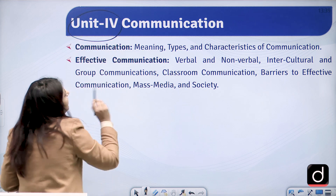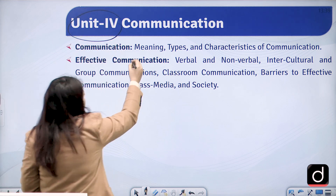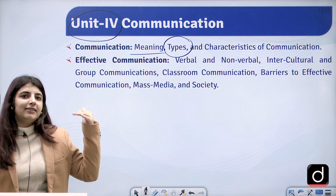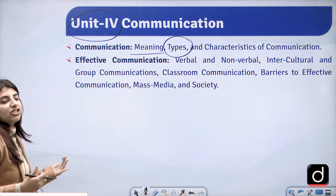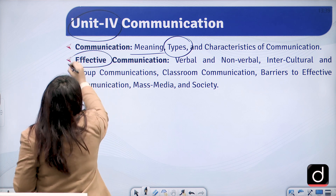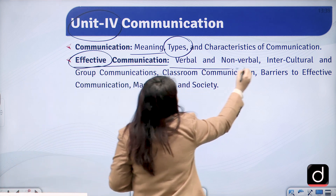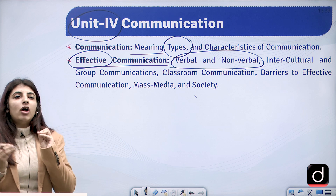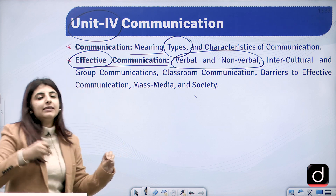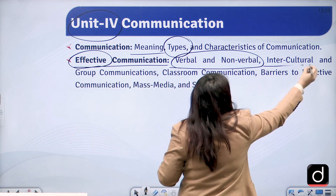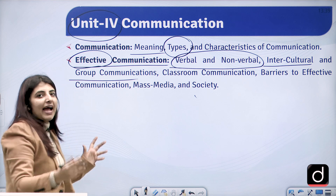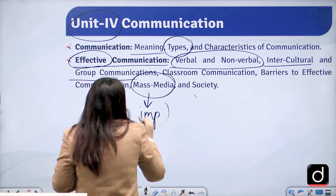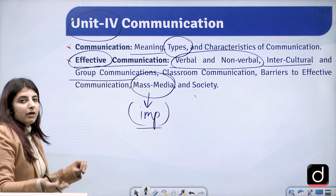Unit 4 is Communication. It covers the meaning of communication, why we communicate, types, and characteristics of communication — just as there are characteristics of research. It also covers what makes effective communication, including verbal and non-verbal communication, intercultural and group communications, classroom communication, and mass media. Questions about newspapers and mass media are also commonly asked.